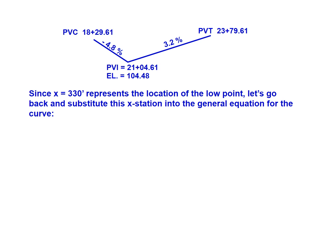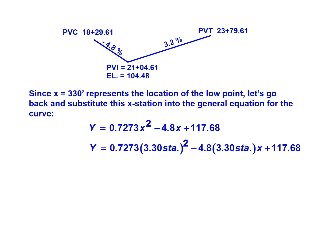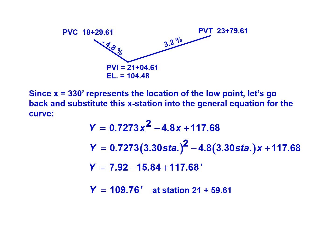We have 330 feet for x representing the low point location, but we plug that x value back into the general curve equation to find the actual elevation. So y equals 0.7273(3.3) squared minus 4.8(3.3) plus 117.68, which simplifies to 7.92 minus 15.84 plus 117.68, giving an elevation of 109.76 feet. Therefore, the low point elevation is 109.76 feet at station 21+59.61.